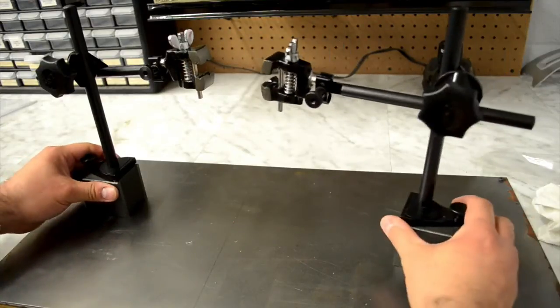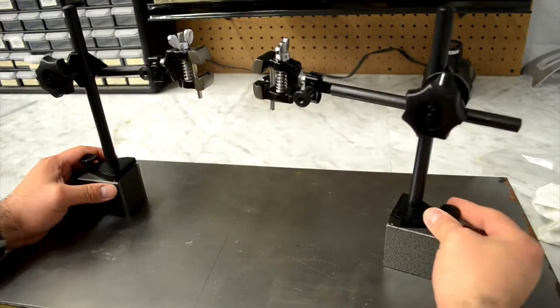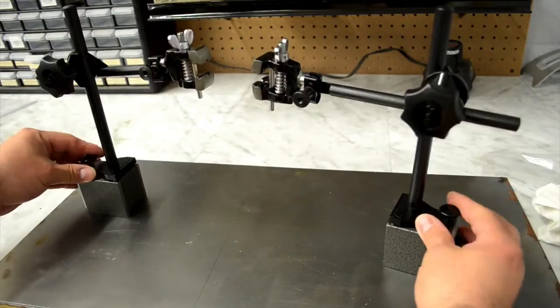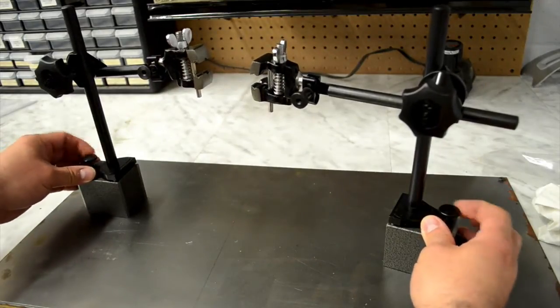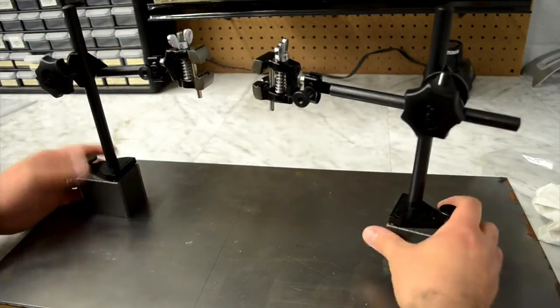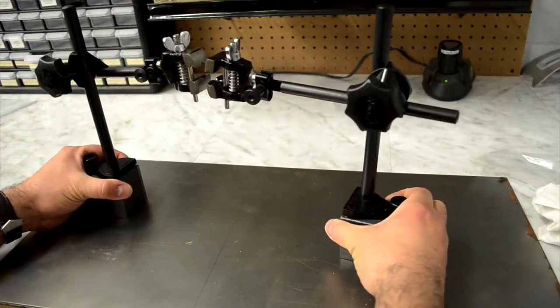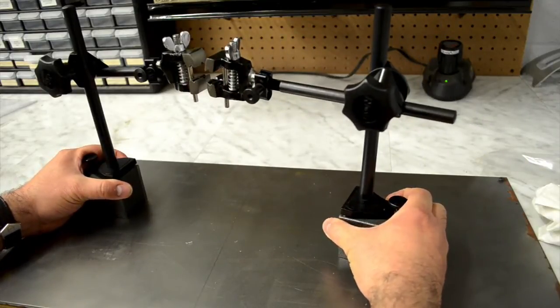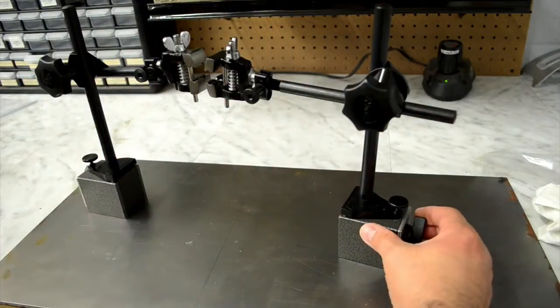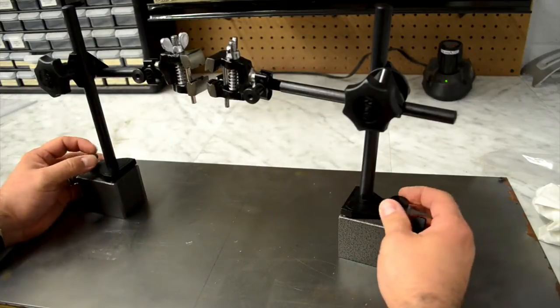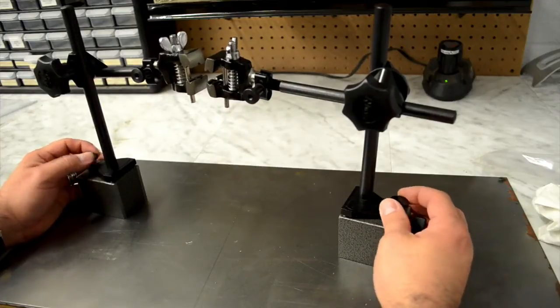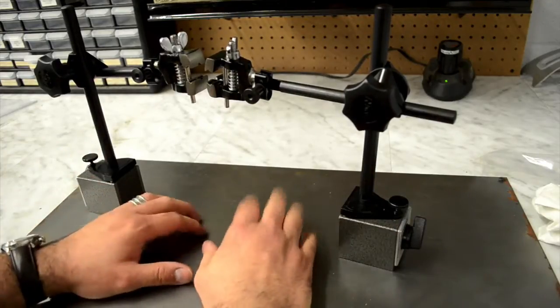The cool thing about the stand is that they have this fine adjustment knob, both of them do, on the bottom. As I turn it, I don't know if you can see in the camera, but they're lowering and raising very slightly, so you can do a fine adjustment. You always get real close to the part, but with this you can get really close and then just fine adjust it by turning these knobs.